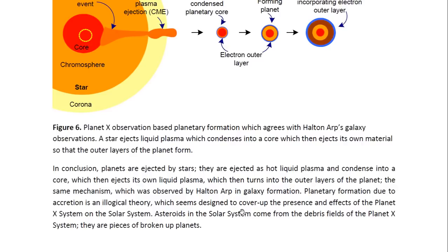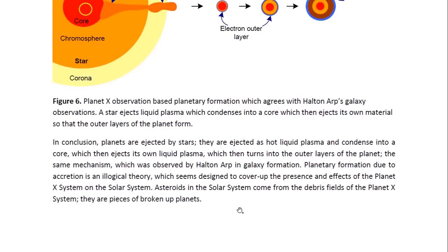The same mechanism which was observed by Halton Arp in galaxy formation. Planetary formation due to accretion is an illogical theory, which seems designed to cover up the presence and effects of the Planet X system on the solar system. Asteroids in the solar system come from the debris fields of the Planet X system. They are pieces of broken up planets.